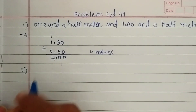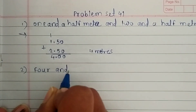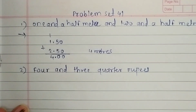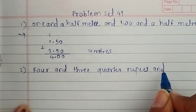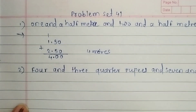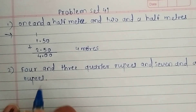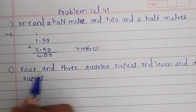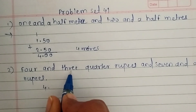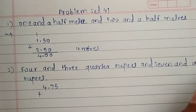The second question involves 4 and 3 quarter rupees and 7 and a quarter rupees. Let's write them as decimal fractions. 4 and 3 quarters means 4.75 rupees, and 7 and a quarter rupees means 7.25 rupees.